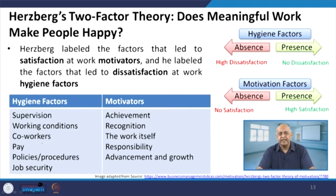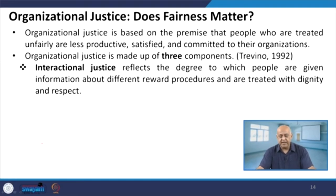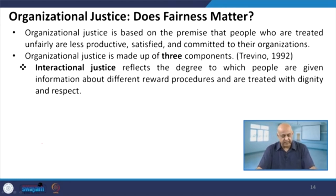Organizational justice is based on the premise that people who are treated unfairly are less productive and less committed to their organizations. Out of the three justices, interactional justice is the extent to which people are given information about different reward procedures and are treated with dignity and respect. When distributive justice is there, it concerns followers' perceptions of whether the level of reward or punishment is commensurate with their performance. This satisfaction issue occurs when followers believe someone has received too little or too much reward or punishment.